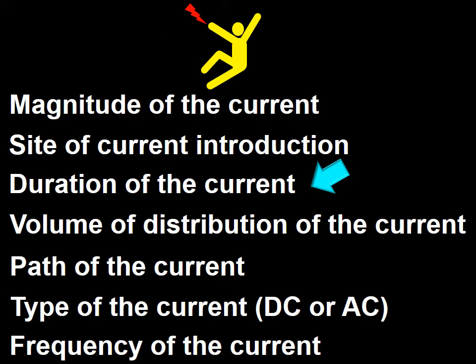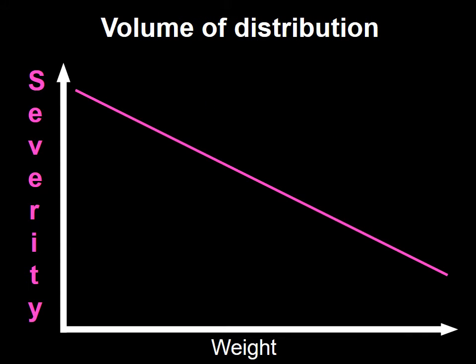After the duration of current, we must consider the volume of distribution of the current. Volume of distribution, here simplified as weight, has an inverse relation to severity. The heavier a person is, the more room for current to be distributed, the lesser the density of the current, and the lesser harm the current will do.